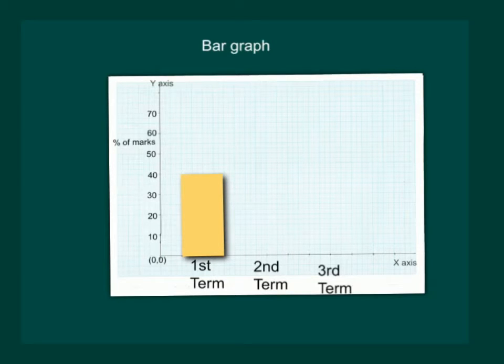He scored 50% in second term. So let us try and mark for the second term 50% and then we shall draw the bar graph. On drawing the bar, now our graph looks like this. It has got two bars and in the second term, he has scored more marks. So the bar is taller.